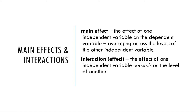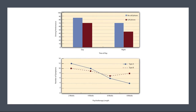The top panel of Figure 9.3 shows a main effect of cell phone use because driving performance was better, on average, when participants were not using cell phones than when they were — the blue bars are, on average, higher than the red bars. It also shows a main effect of time of day because driving performance was better during the day than during the night, both when participants were using cell phones and when they were not.